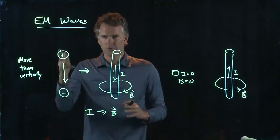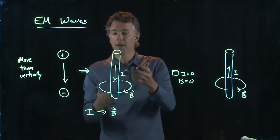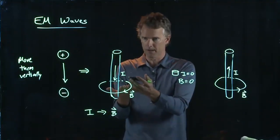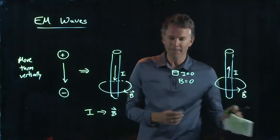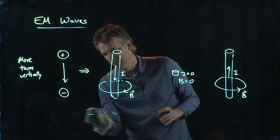So, the charges went up and down. We developed an E that oscillated in time. But now we have a current that's going up and down. And we're going to develop a B that oscillates in time.